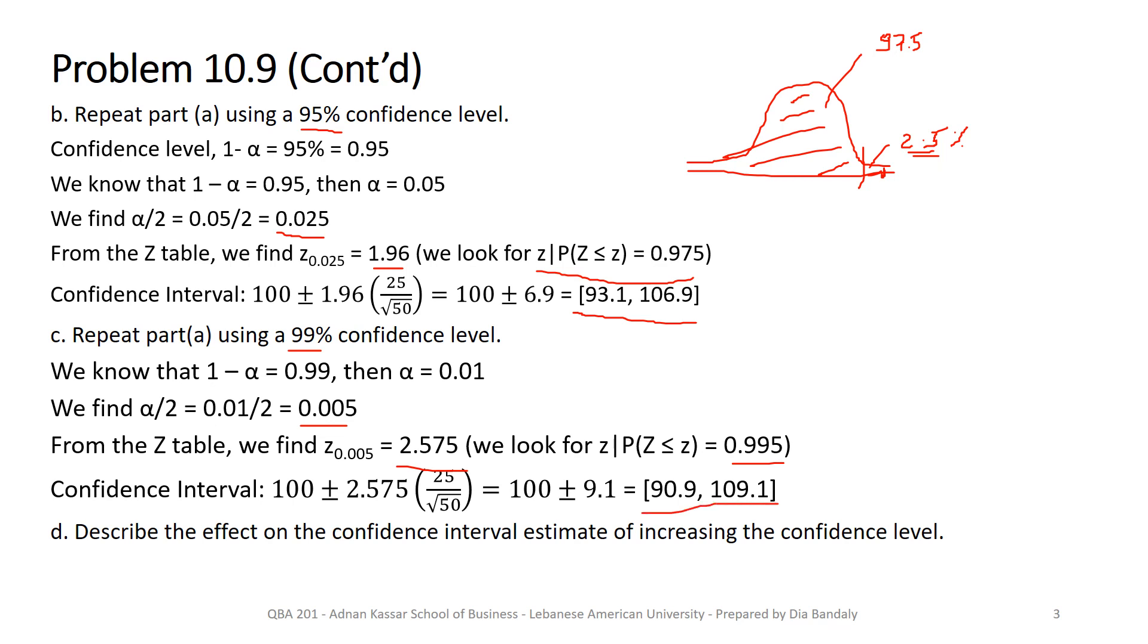Now the last part: we need to describe the effect of the confidence interval. So what do we notice? As we explained in the lesson videos, as z increases or as 1 minus alpha—the confidence level—increases, that increases z for us, which means what? Which means the width of our confidence interval will be increasing.